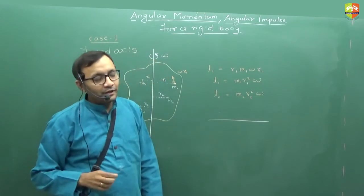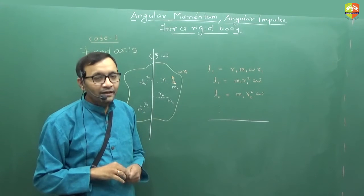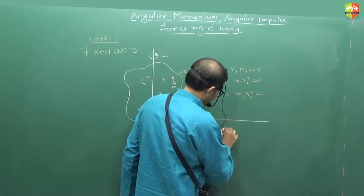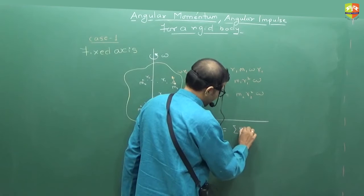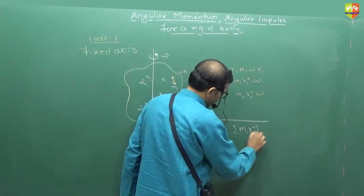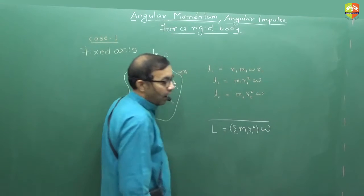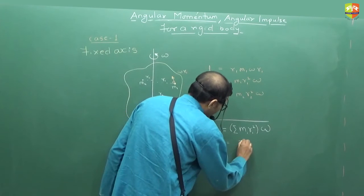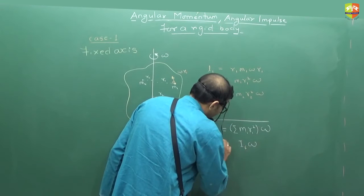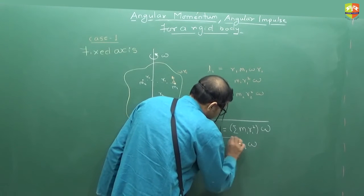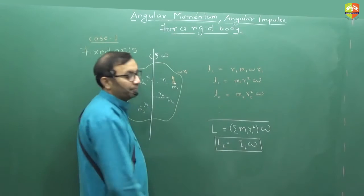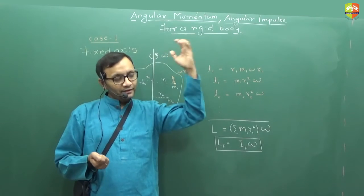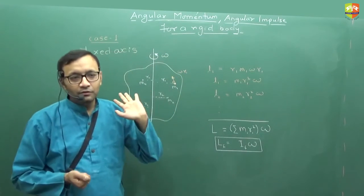If you add up all the angular momenta, you get the total angular momentum of the rigid body. The total angular momentum L equals summation of Mi·Ri²·ω. Since ω is constant, it comes out: L = I (about fixed axis) × ω. This is the angular momentum about the fixed axis — it comes out so simply, just like kinetic energy came out as ½·I·ω² for the fixed axis.